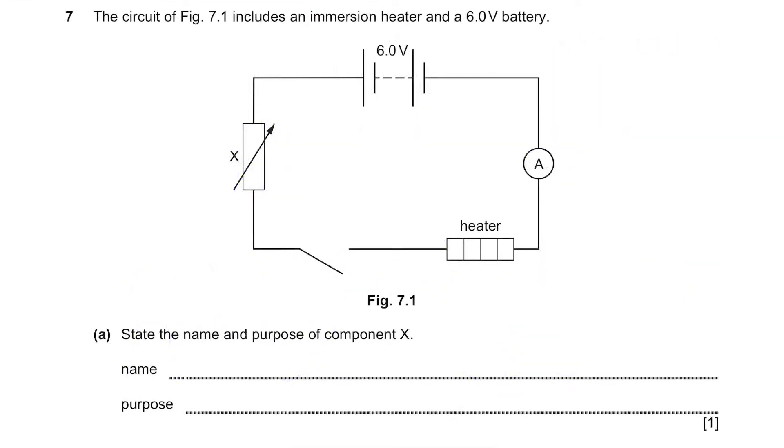Question 7. The circuit of figure 7.1 includes an immersion heater and a 6V battery. Part A. State the name and purpose of component X.